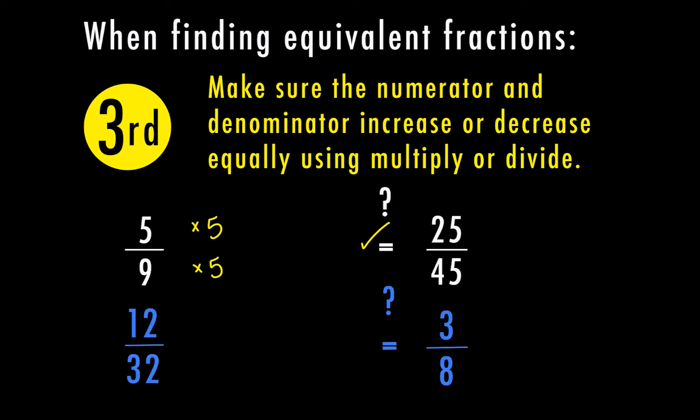Another example: does 12 over 32 equal 3 eighths? This time we're reducing, so we're going to divide. 12 divided by 4 equals 3, and 32 divided by 4 also gives us 8. So this one is also equivalent. It doesn't matter if you multiply or divide, as long as you're multiplying or dividing the top and the bottom by the same number.